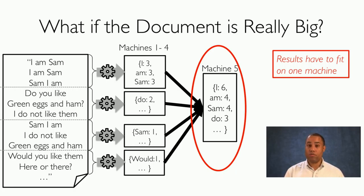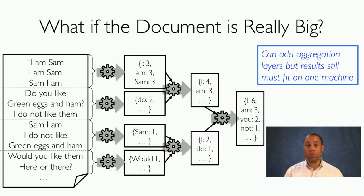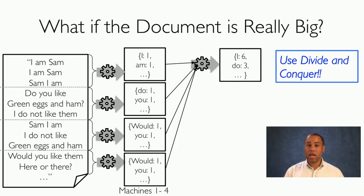Another alternative you might think of is adding layers of aggregation — machines one and two combine their results, and machines three and four combine their results. But ultimately, all of the results still have to fit on one machine, so this approach won't work either for a really large document.